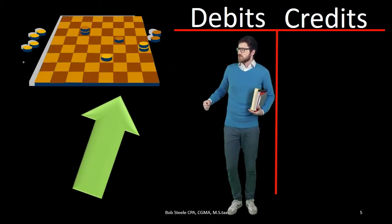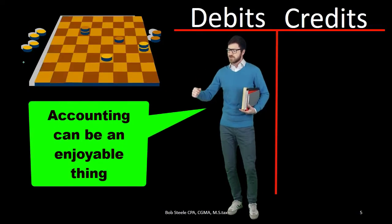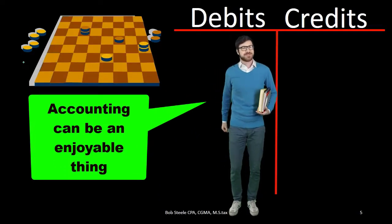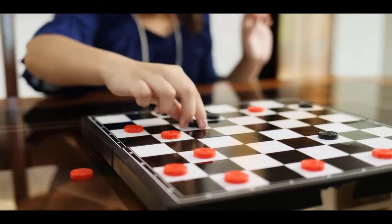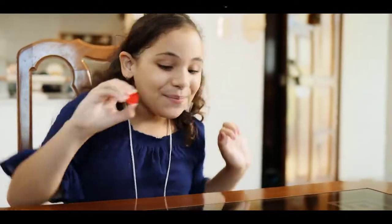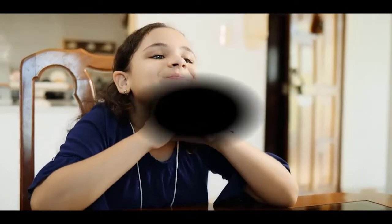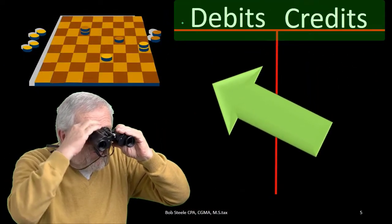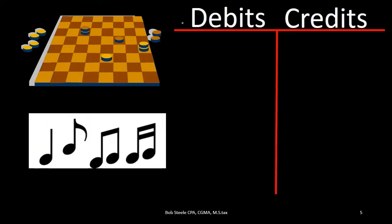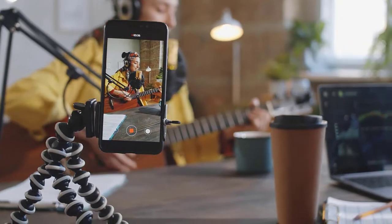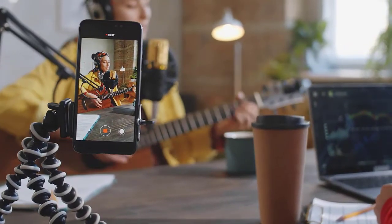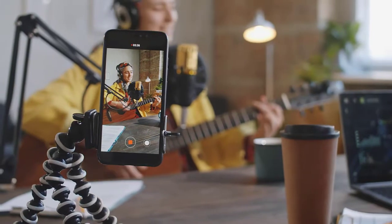Whenever we learn something new, even if it can be enjoyable — and accounting can be enjoyable, like moving pieces around in checkers — in order to play the game of checkers we have to know where the pieces go on the board. The same is going to be true for debits and credits. It's the same for something like music: we have to learn scales or memorize songs before we can work with those tools.